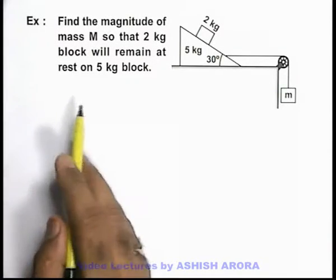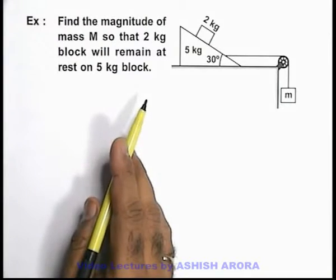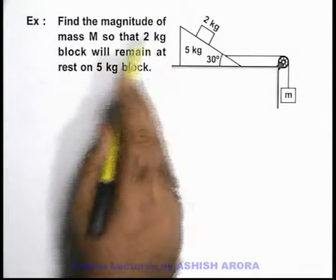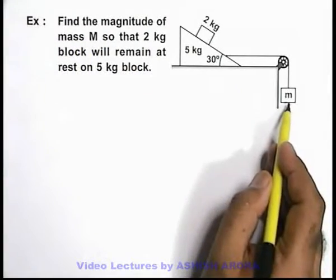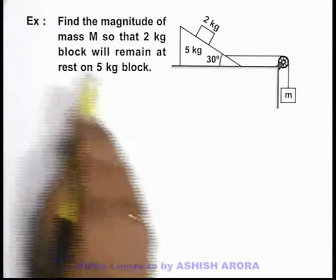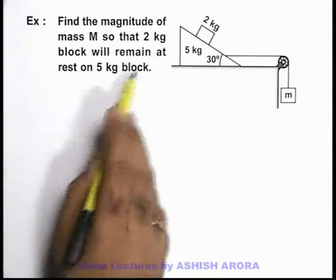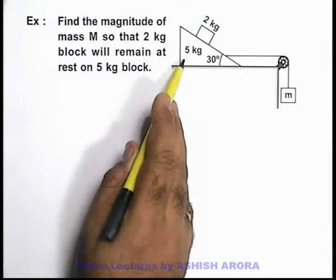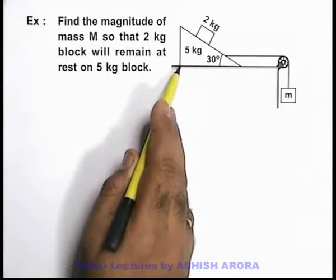Similar to the previous example, we take up one more example. Here we're required to find the magnitude of the hanging mass m so that this 2 kilogram block will remain at rest on this 5 kilogram block, which is a triangular wedge block.